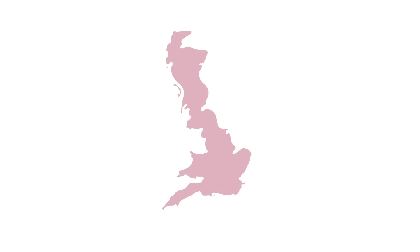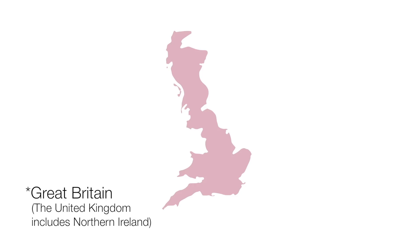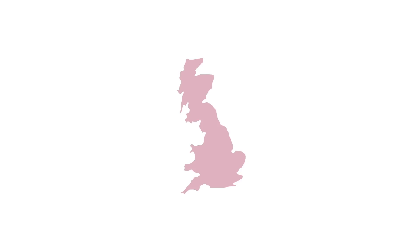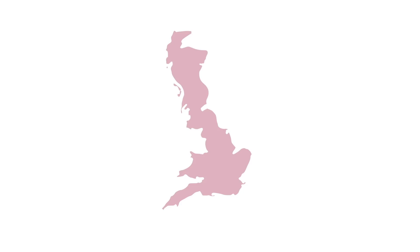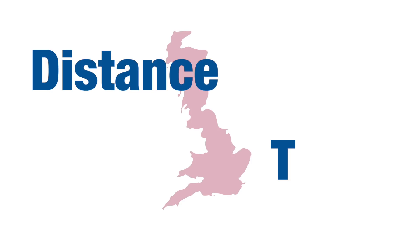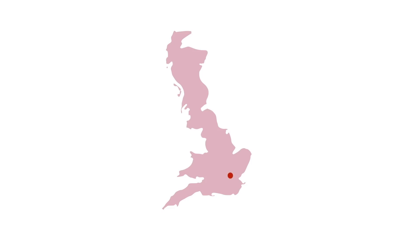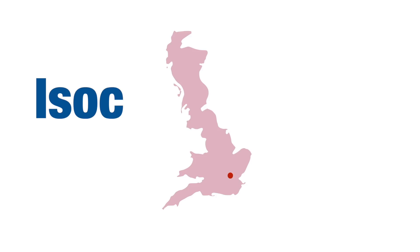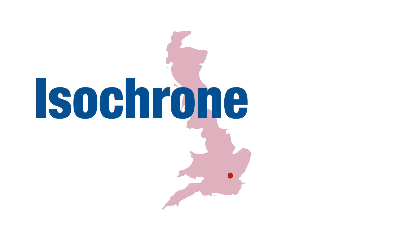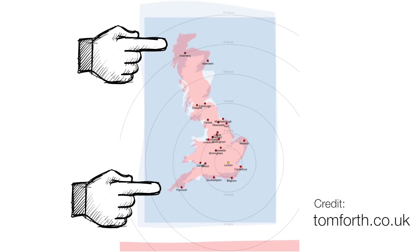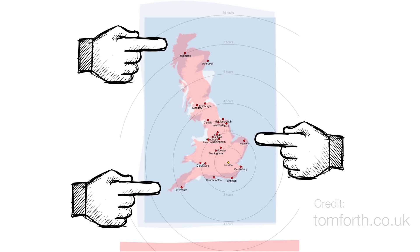This is a map of the UK. Do you notice anything strange about it? That's hardly a fair question. I grew up colouring in pictures of this map at school. For those of you who didn't, this is a more conventional view. The reason this version of the map is distorted is that it's not a map of distances — it's actually a map of time, representing travel time from London. This kind of map is called an isochrone map, in case you want to Google it for your own country or region.